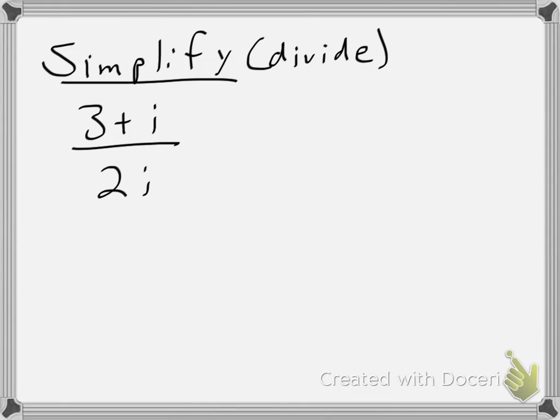There are two types of division problems involving complex numbers, or in this case, involving rational expressions. This is the first case, where I have a single term in the denominator with a complex number. In other words, I have 2i. I have one term in the denominator, and it has an i. That's the first case, which you see here.